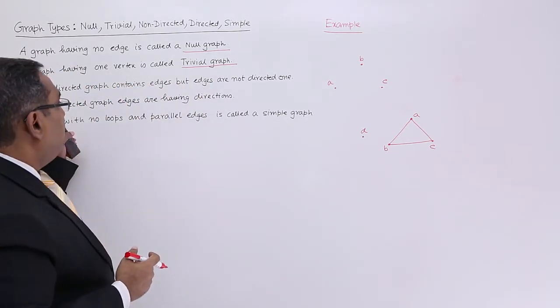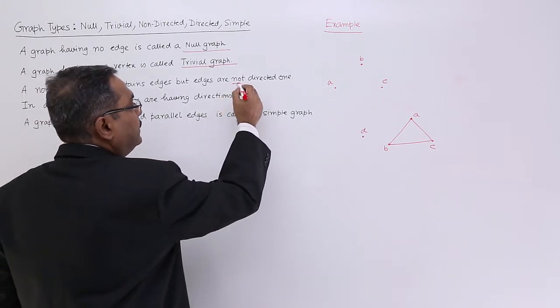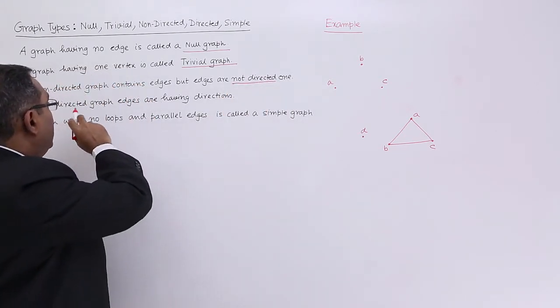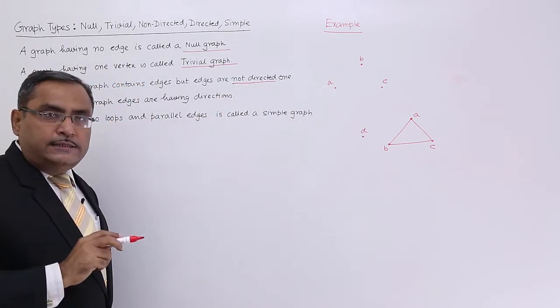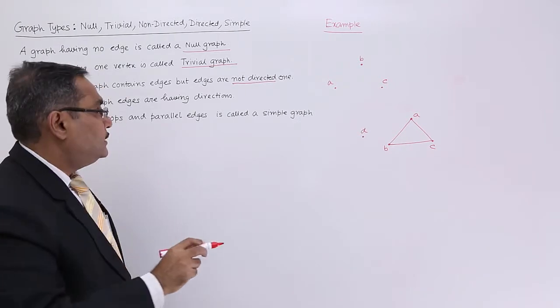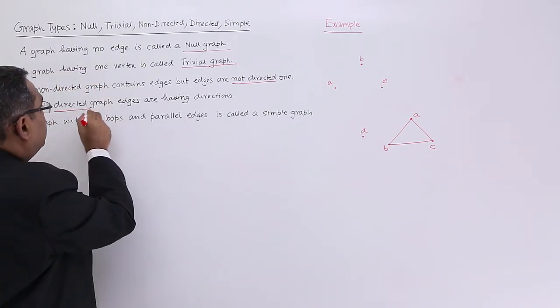Next is a directed graph. A directed graph will have edges with directions, and that is why it is called a directed graph.